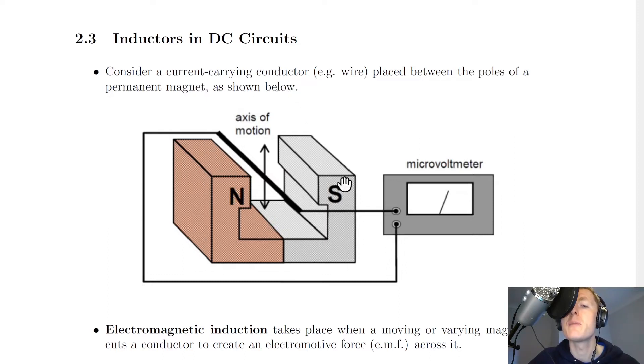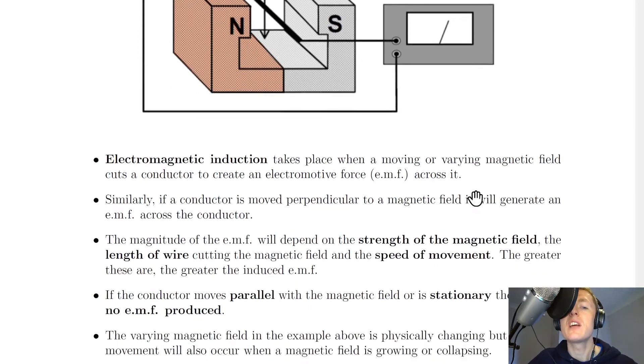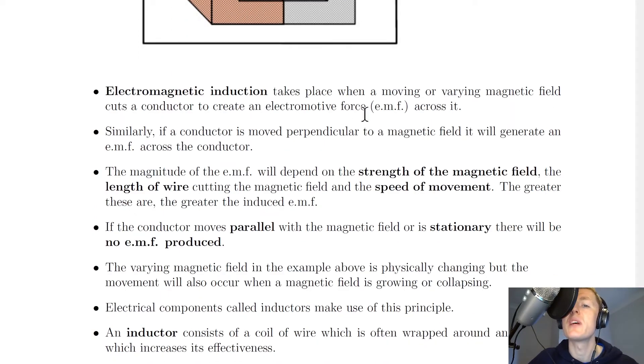So here we've got this permanent horseshoe magnet with our north pole there and our south pole there, and we've got this wire lying in the magnetic field, and this is connected to a microvoltmeter. It says that electromagnetic induction takes place when a moving or varying magnetic field cuts a conductor to create an electromotive force, i.e. an EMF across it.